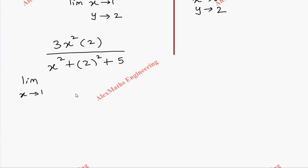Then the numerator is 6x square. Denominator is x square, 2 square is 4, 4 plus 5 is 9.